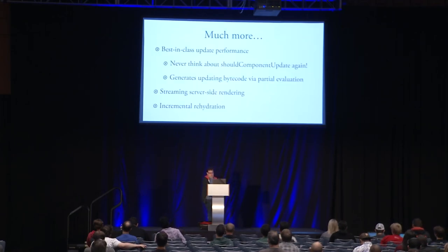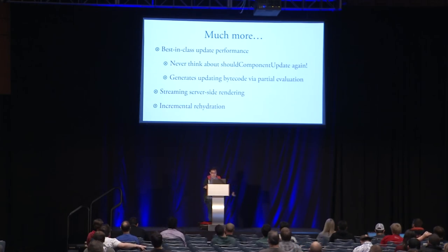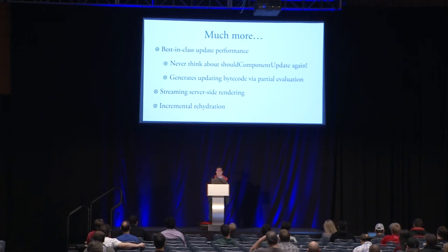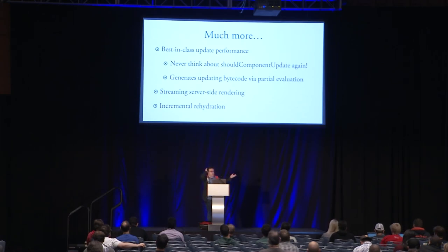I didn't get a chance to talk about a lot of other important features the Glimmer VM provides. For example, I didn't talk about updating at all. The way we keep things responsive is by having the initial render emit a much smaller updating program, which we can run whenever we want to update the DOM without having to walk an entire tree of virtual DOM. Instead of walking a tree, comparing trees, and reconciling, the initial rendering program emits a second program that we run, that second program emits a third program, and so on whenever we want to update something. The consequence is that we don't have to allocate or create anything whenever we're looking to update.